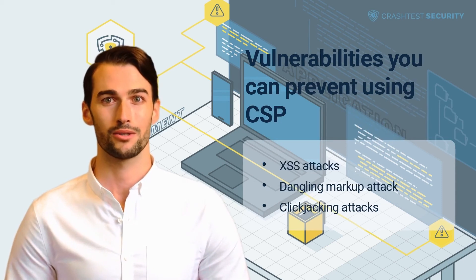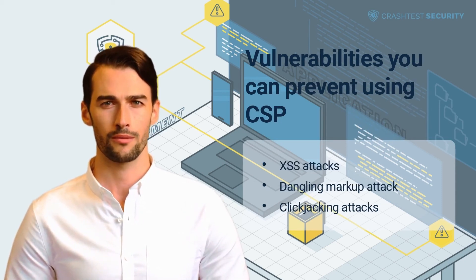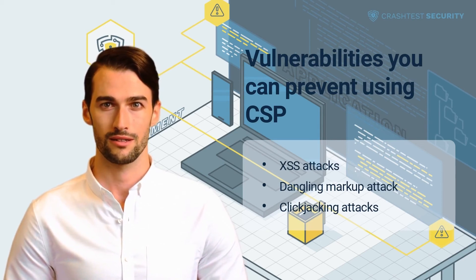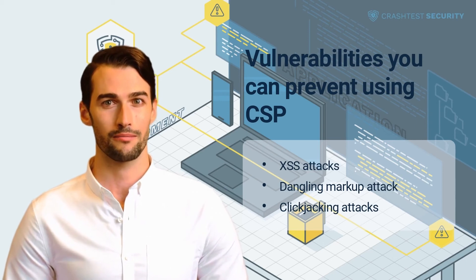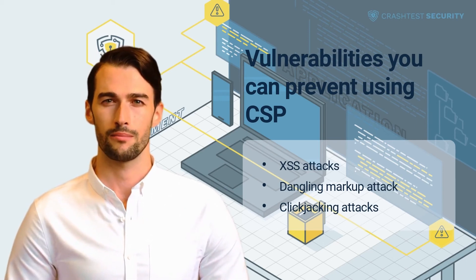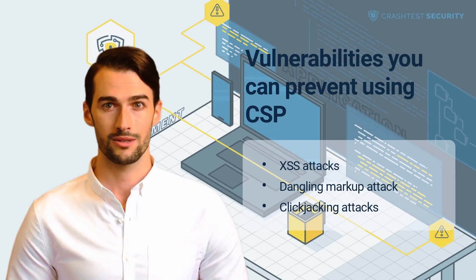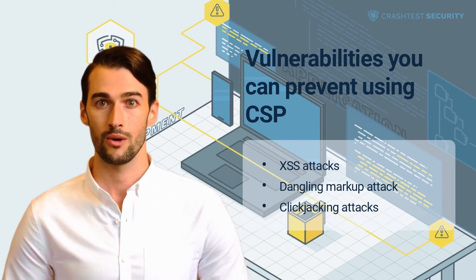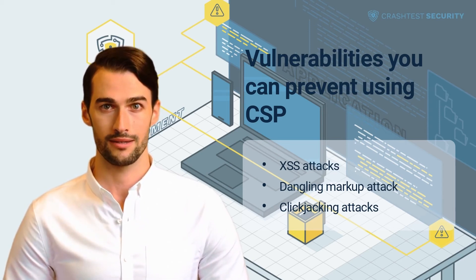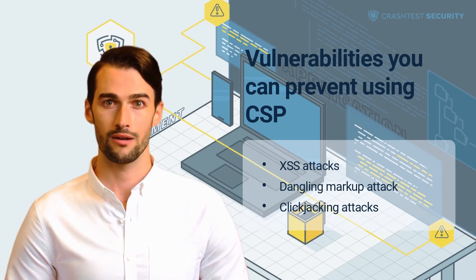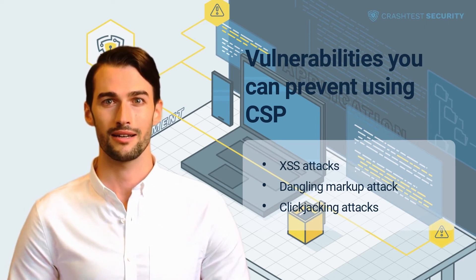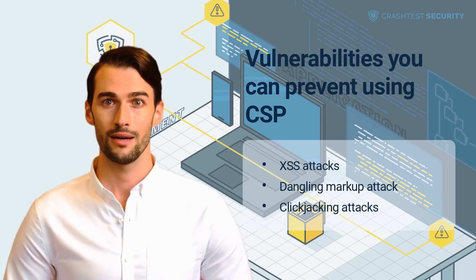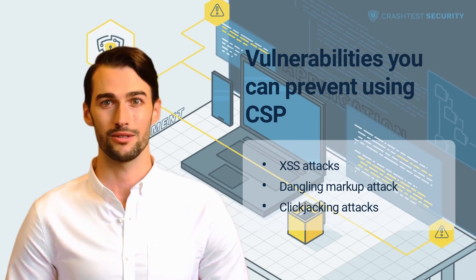A content security policy header provides a framework for developers to control privilege and the loading of resources for the application process. It helps reduce the risk of attacks that leverage the need for loading resources within a malicious context. With properly formulated CSPs, developers can access a reporting mechanism to detect and document security flaws exploited in production. All major browsers support CSPs, making the standard header an essential additional layer of application security. CSPs enable granular control over inline script execution, how inline styles are applied, and dynamic code execution.